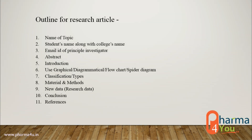In this slide there is the outline for a research article. The first page includes: name of topic, name of student, email, and address. First write the abstract — the abstract means the short information about your complete research work. Then comes the introduction, where you write the intro of your research work. Then use graphical, diagrammatic, flow charts which help to make your research work easy to understand. Then classification, then material and methods — in this segment you show complete information about what materials are used to perform the research and which method is used. Then describe all your results, followed by conclusion, and finally the references.